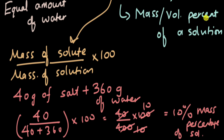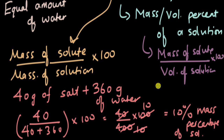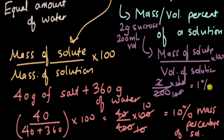Now let's look at the second way of describing concentration: mass by volume percent of a solution. This is calculated using mass of solute divided by volume of solution, multiplied by 100. For example, if we have 2 grams of sucrose mixed in 200 ml of water, the mass by volume percent is 2 divided by 200 into 100, which gives us 1 percent mass by volume percent of the sucrose solution.